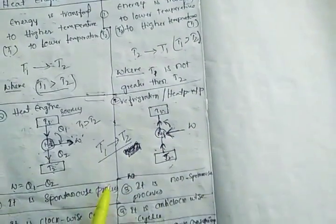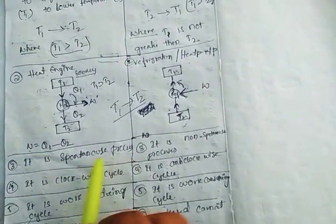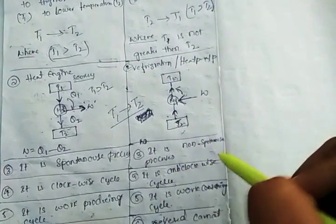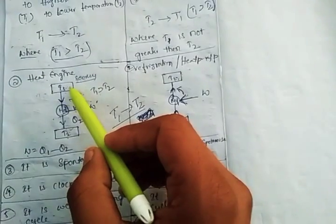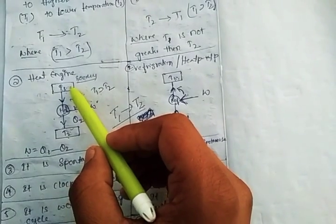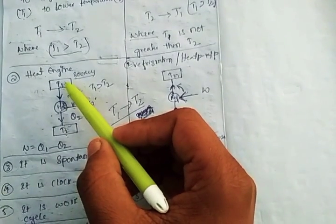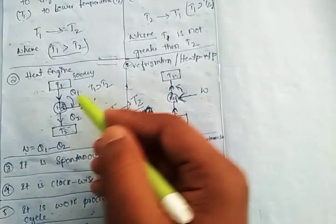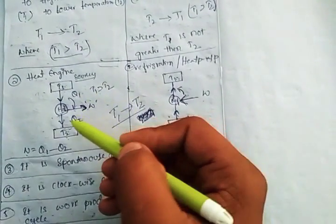The third point: the heat engine is a spontaneous process, whereas refrigeration is a non-spontaneous process. It is spontaneous in a heat engine because the temperature difference between the higher and lower reservoirs causes energy to transform from higher to lower naturally — we are not doing any work; the process is very quick and fast.